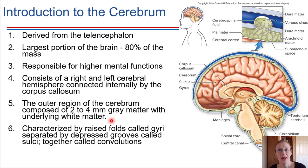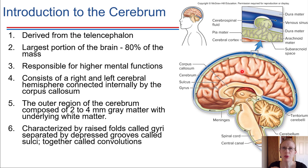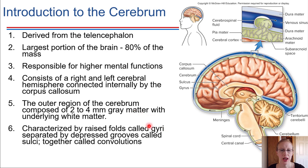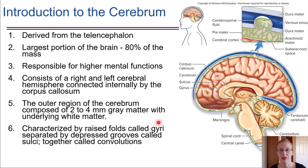The cerebrum has characteristic convolutions on the surface — it looks like it's all folded. We have different names for the raised portions and the more sunken down portions. The raised spots are called gyri — gyrus is singular, gyri is plural. They are separated by grooves called sulci. Sulci are the grooves, and gyri are the raised portions.